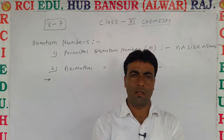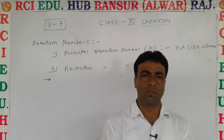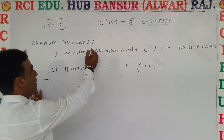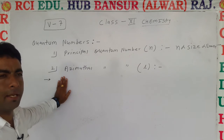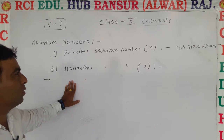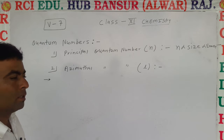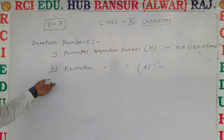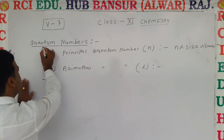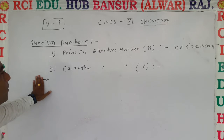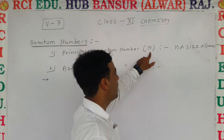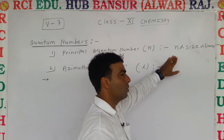Welcome dear students to RCI Education Hub Bansur. Today we study quantum numbers. In previous classes we saw the periodic table, and next we see how to write electronic configuration of atoms. First we learn quantum numbers step by step. In the previous video we covered the introduction to quantum numbers and the first quantum number — the principal quantum number, represented by n — and its features.